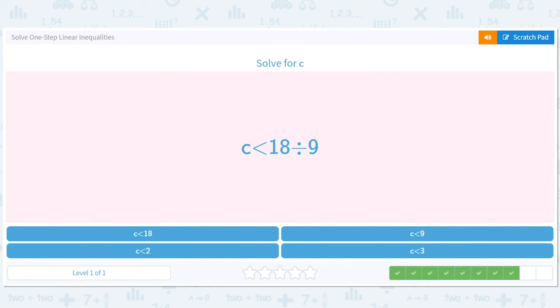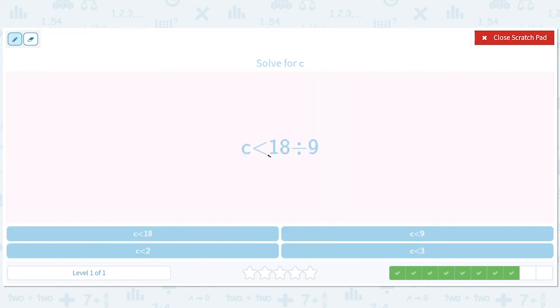C is less than 18 divided by 9. C is less than 2.